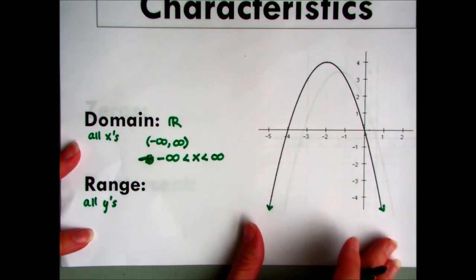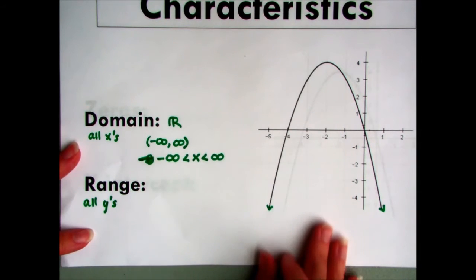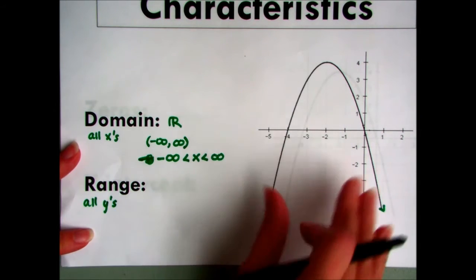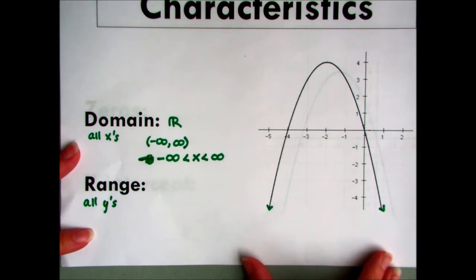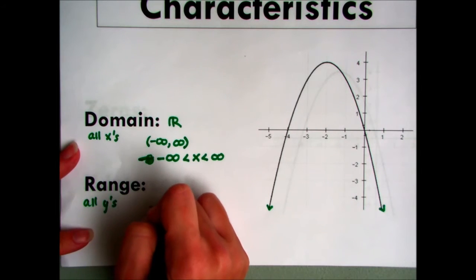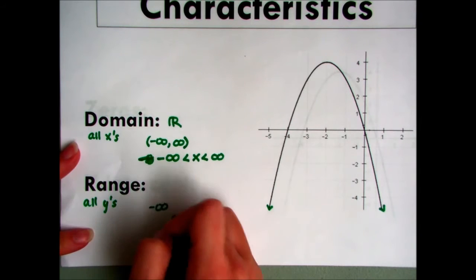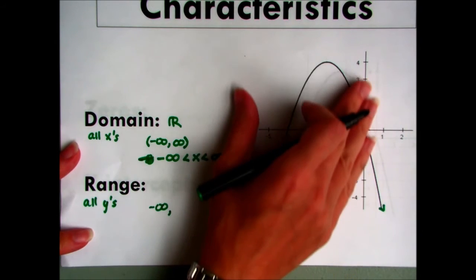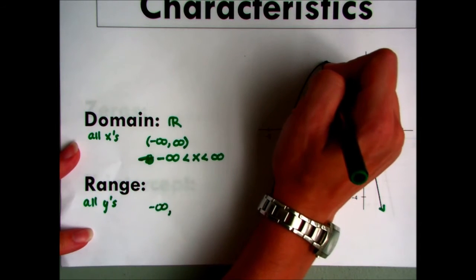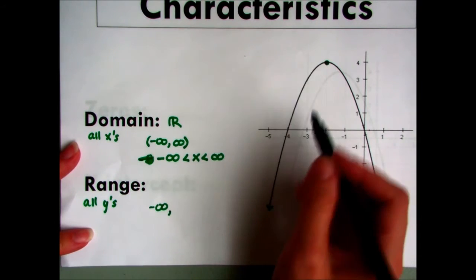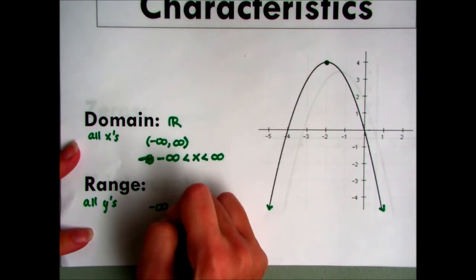The smallest number it can be would be down here. That's where all the really small numbers are on the y-axis. So the smallest number is going to actually continue down forever off of this graph, which means it's going to be negative infinity. Well, this can also go all the way up, but it will never actually go past here. So the top point is going to be 4.